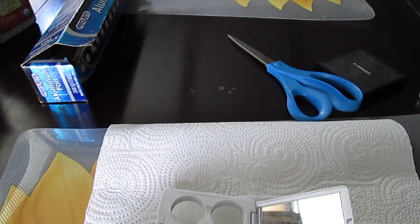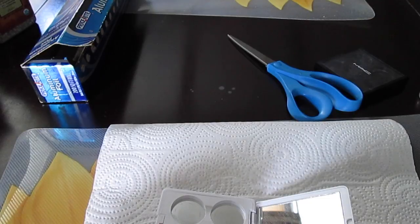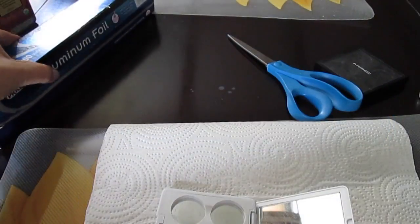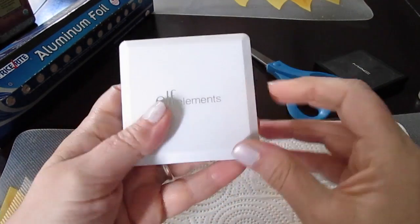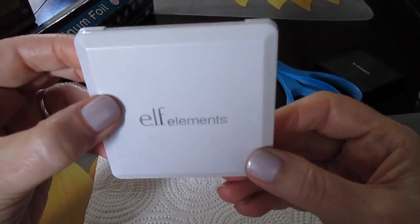Hey guys, today I'm going to show you how to make your own eyeshadow pans to press eyeshadows in. All you're going to need is some aluminum foil and an e.l.f. quad.